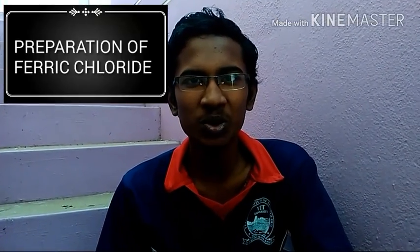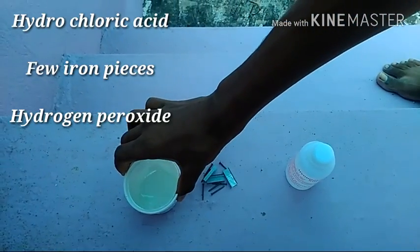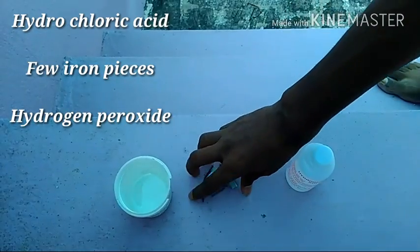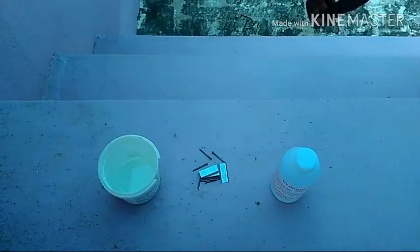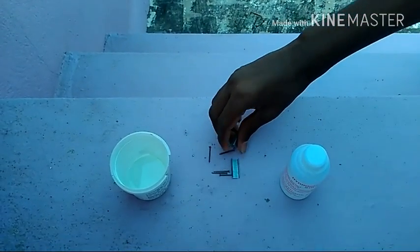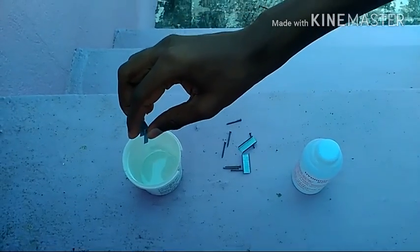Hello everybody, in this video we are going to see the ferric chloride preparation. We need 2N dilute hydrochloric acid, a few pieces of iron, and an oxidizing agent hydrogen peroxide. First, let's add some iron pieces into the 2N dilute hydrochloric acid.